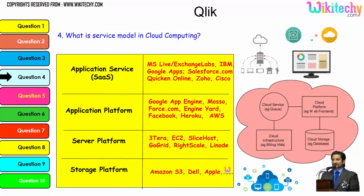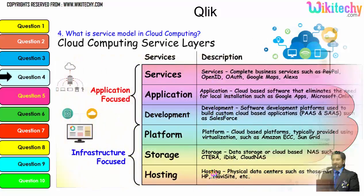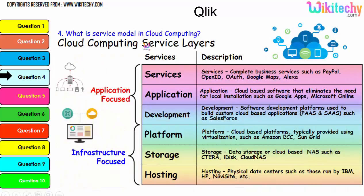Digging further into service models: the application service, application platform, server platform, and storage platform are the typical examples — storage is provided by Amazon S3, Dell, and Apple. The important service layers are services, application, development, platform, storage, and hosting. These are important services which will be asked in interviews about cloud computing.